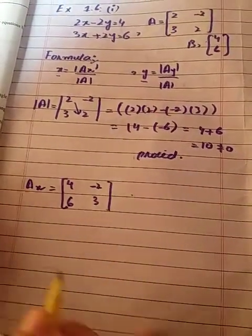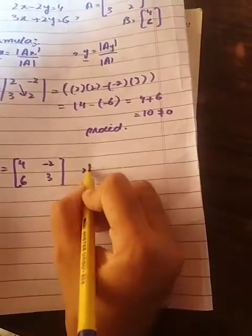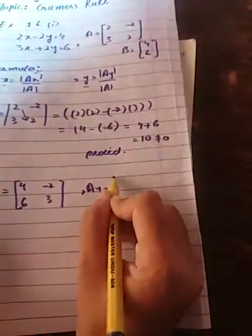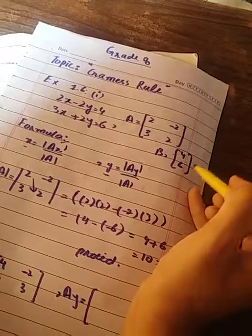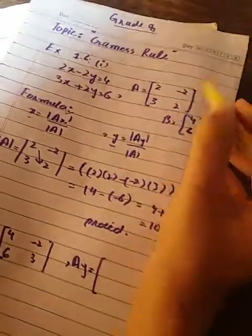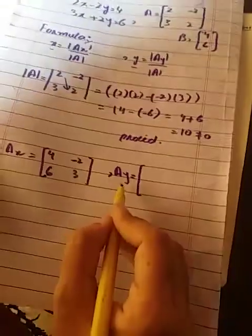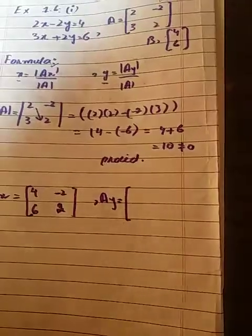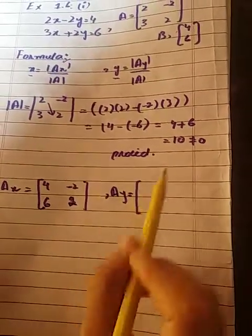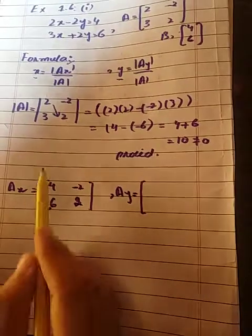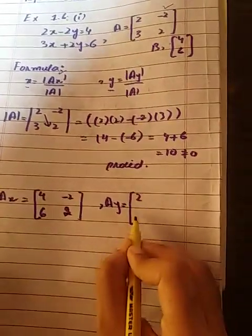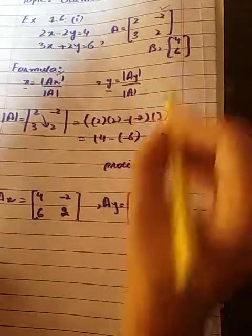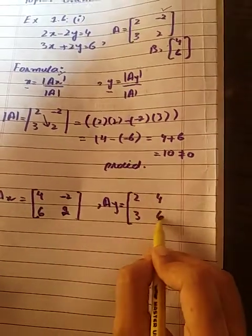If we want to find Ay, we replace the second column with the b set column. For y, we use the second column. For x, the first column. Write the first column values as it is, and replace the second column. Here, you'll have 4 and 6.